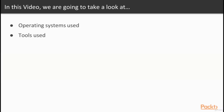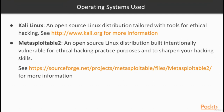Operating systems and tools used. The operating systems we're going to utilize in this course are Kali Linux, which is an open-source Linux distribution tailored with tools for ethical hacking — visit www.kali.org for more information or to download it. We're also going to be using Metasploitable 2, which is an open-source Linux distribution built intentionally vulnerable for ethical hacking practice purposes. You can visit sourceforge.net/projects/Metasploitable/files/Metasploitable2 for more information.